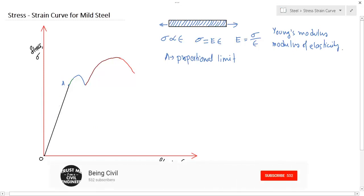For a short period after A up to point B, the material may still be elastic but the nature of the curve is not linear. It is curved. If you remove the stress from point B, the material can recover its original position. B is called elastic limit.